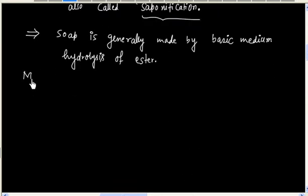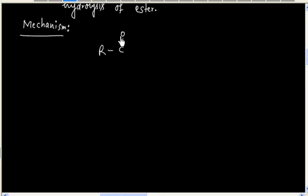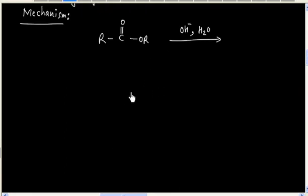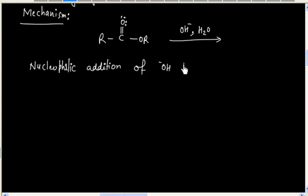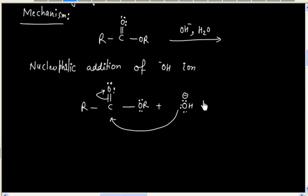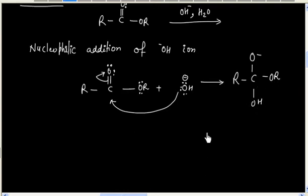Let us discuss the mechanism for basic medium hydrolysis. We have an ester and we have OH⁻ as a base in aqueous medium. The first step is nucleophilic addition of OH⁻, where OH⁻ is acting as a nucleophile and will attack on the carbonyl carbon, giving us a tetrahedral intermediate.